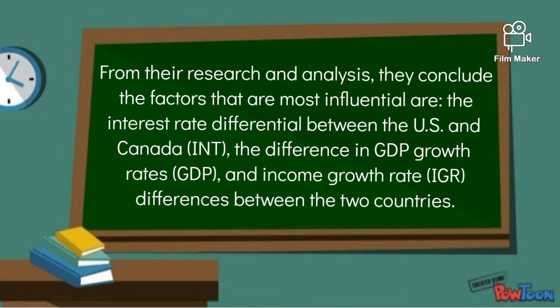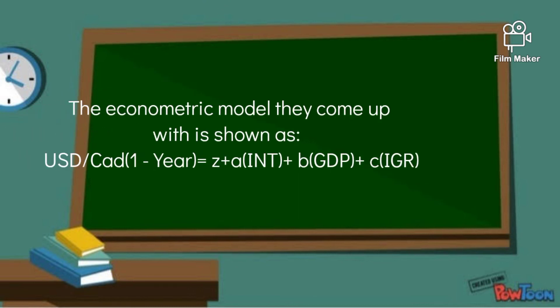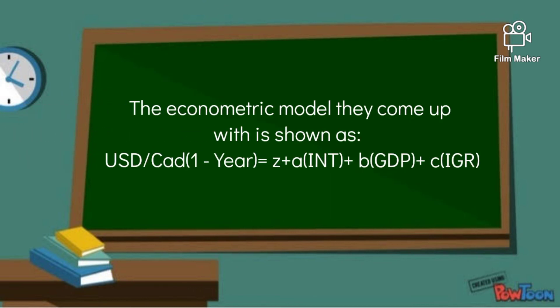From their research and analysis, they concluded that the factors that are most influential are the interest rate differential between the US and Canada, the difference in GDP growth rates, and the income growth rate differences between the two countries. The econometric model they come up with is shown as: US dollar per Canadian dollar times (1 minus year) is equal to Z plus A times INT plus B times GDP plus C times IGR.